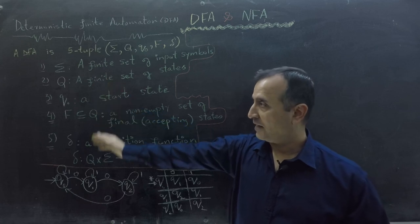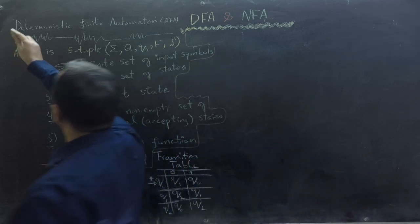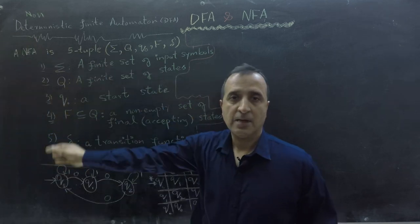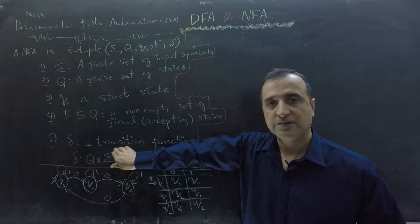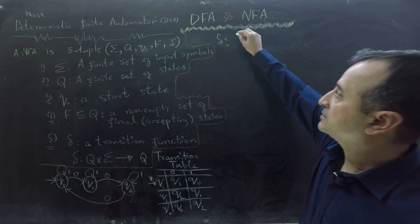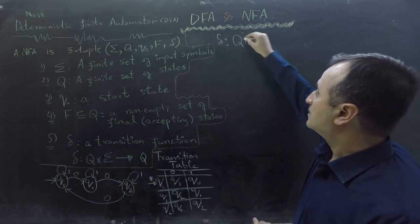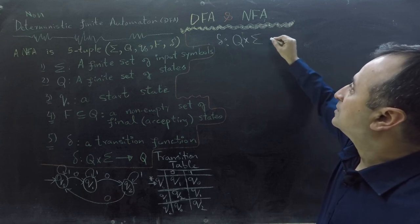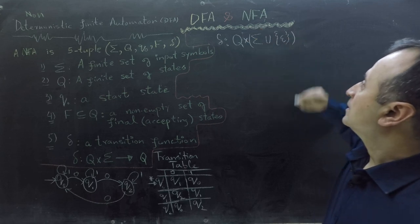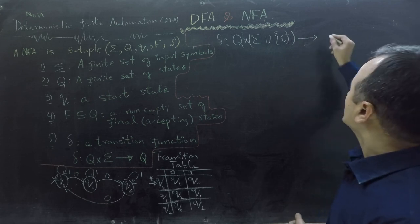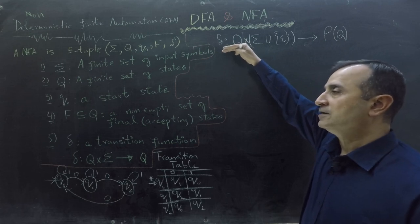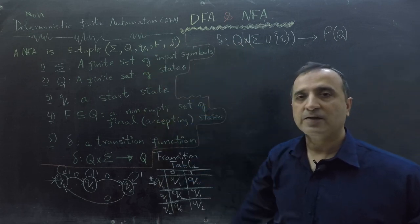The definition of NFA, which stands for Non-Deterministic Finite Automata, is exactly the same as DFA except the only difference is in the definition of the transition function. The transition function of NFA takes the set of states Q and the set of input symbols sigma union the empty string, and maps them to the power set of the set of states. Except the transition function, the rest of the definition of NFA and DFA are exactly the same.